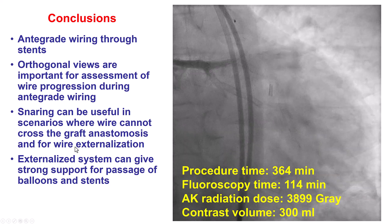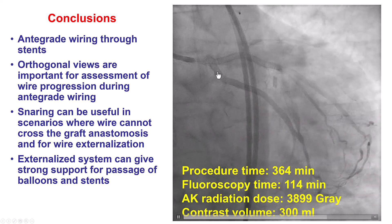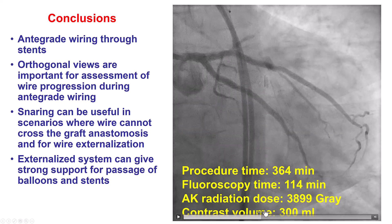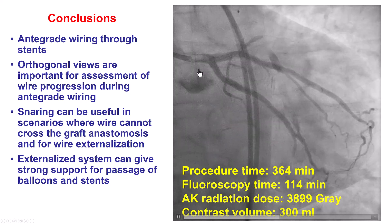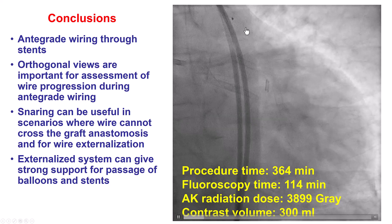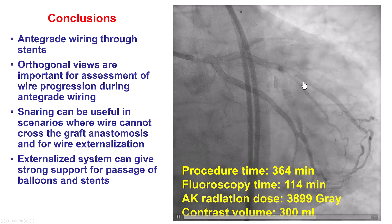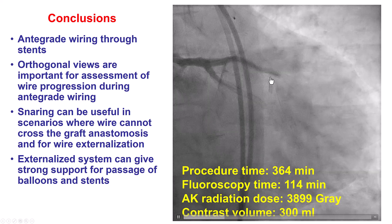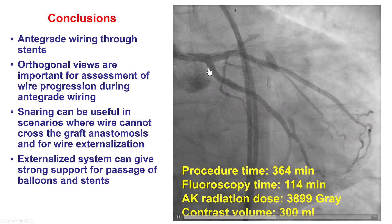The externalization system provided very strong support for equipment delivery. Because we had a bifurcation at the proximal cap of both CTOs, we used a two-stent technique — DK-crush — though a DK-culotte could have been used as well, and we got a nice result with TIMI flow in both vessels. Finally, we occluded the saphenous vein graft. This remains somewhat controversial, but there is concern that significant competitive flow through the SVG may predispose to stent thrombosis, which is why it was closed in our case.